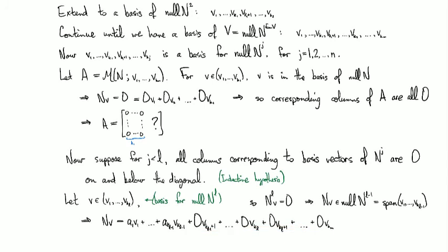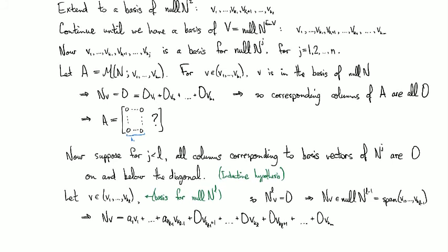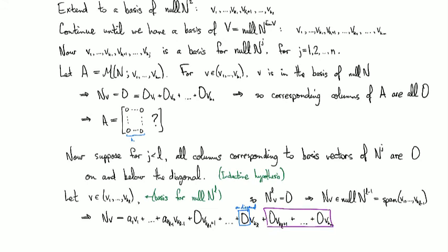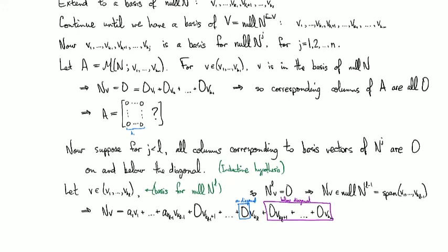So that means it's a linear combination of the first few, and the corresponding coordinates for all of the rest are equal to zero. That's the key idea, right? Okay, and so let's see now, if we look at this, we will see here that this zero right here corresponds to the one on the diagonal, and then these ones here correspond to things that are below the diagonal. So that gives us zeros on the diagonal and below.